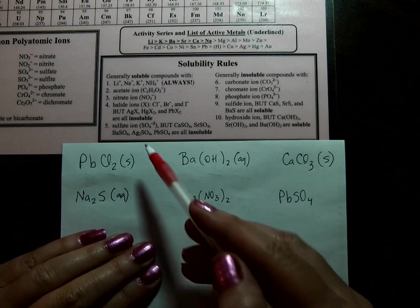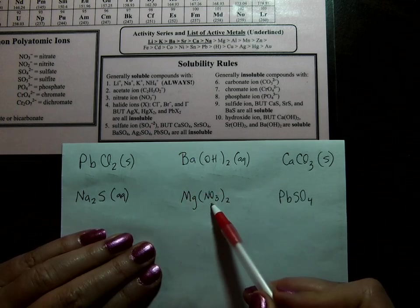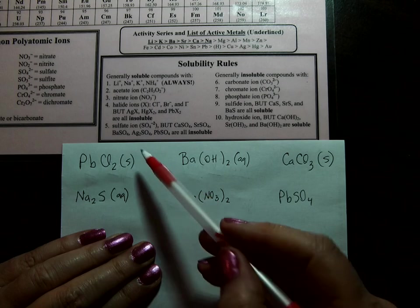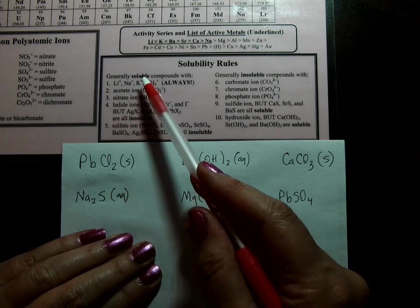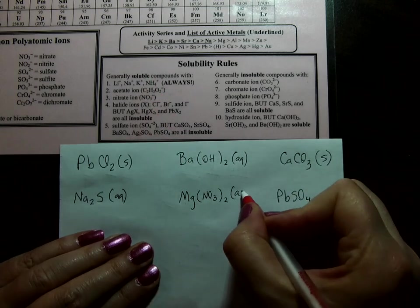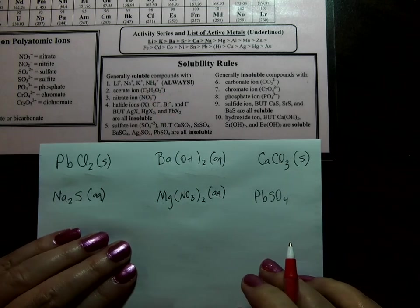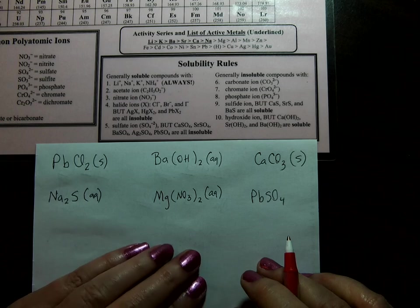Magnesium nitrate. We're looking for magnesium or nitrate, whichever we come to first. Nitrate, rule number 3, is soluble. Thus it gets an AQ and breaks apart into ions in the water.